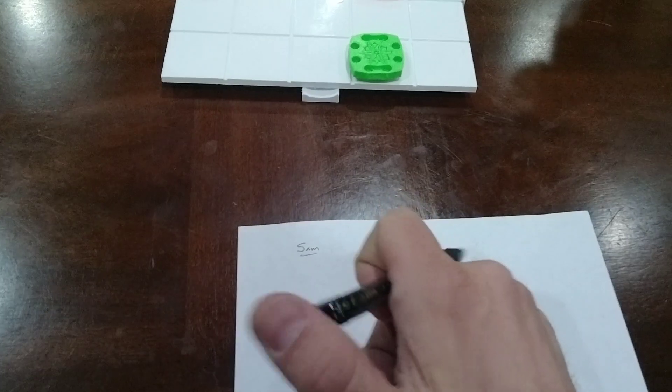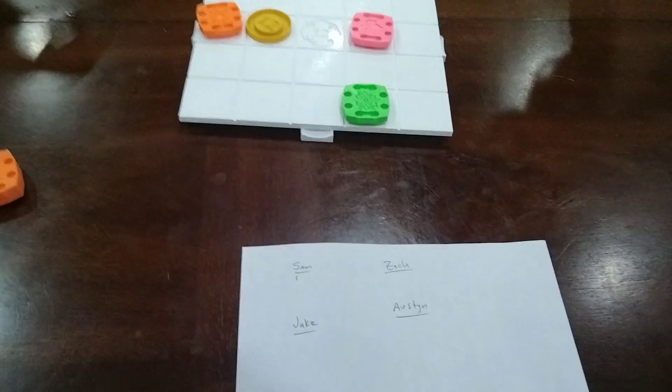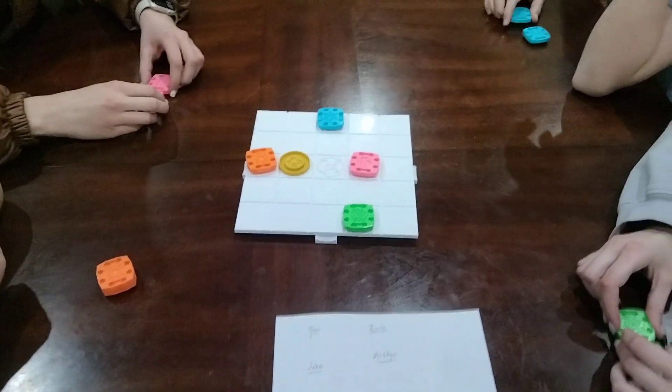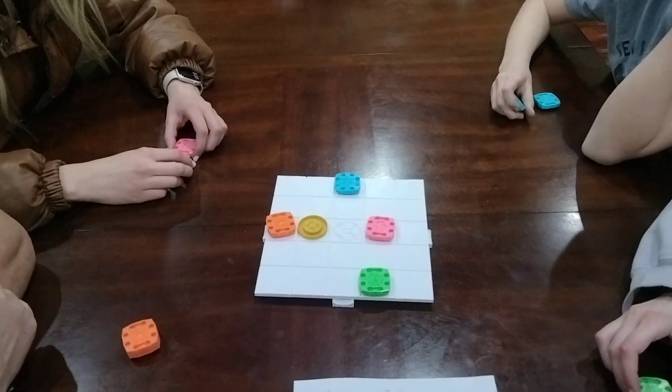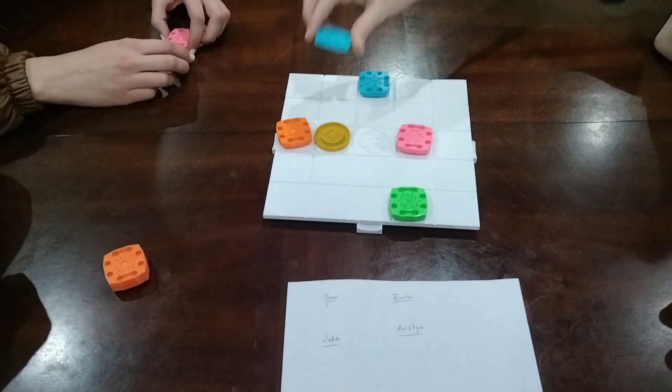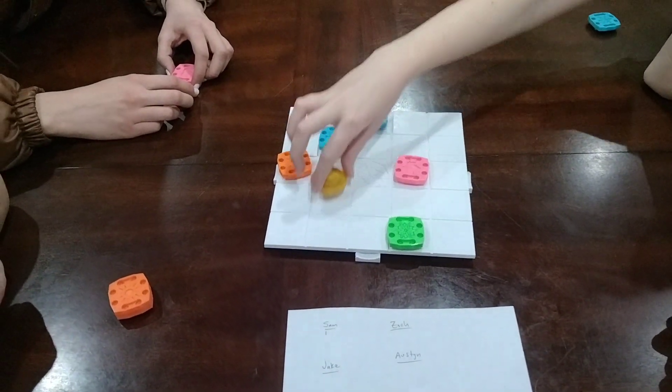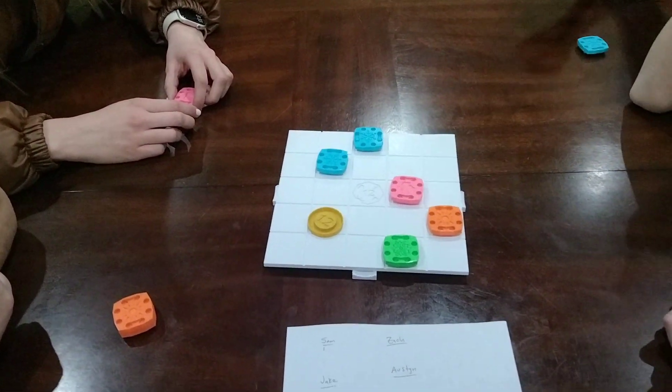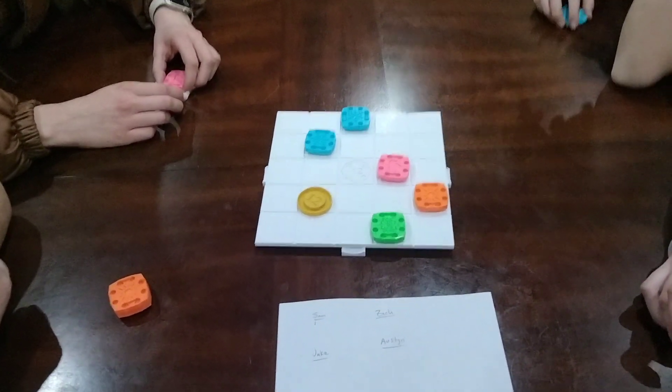So Sam has one point. And once you score three points, your pieces are removed from the board. It's my turn. All right. And then this goes over here. Pieces teleport through the board to the other side.